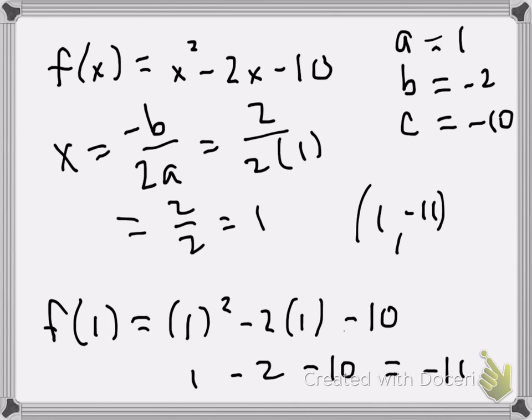And that's going to be my y value that goes into my ordered pair. And that's my vertex: 1 and negative 11. For this particular problem, that's all we need to answer the question. So hopefully that clears things up a little bit. Let me know if you have any other questions.